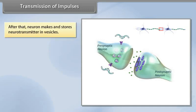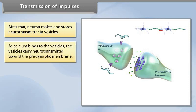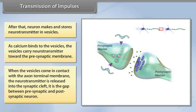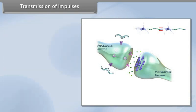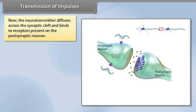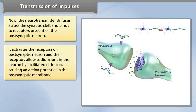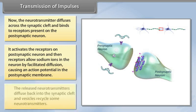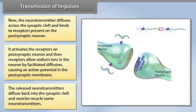The neuron makes and stores neurotransmitters in vesicles. As calcium binds to the vesicles, they carry neurotransmitter towards the pre-synaptic membrane. When the vesicles come in contact with the axon terminal membrane, the neurotransmitter is released into the synaptic cleft. The neurotransmitter diffuses across the synaptic cleft and binds to receptors on the post-synaptic neuron, activating them. The receptors allow sodium ions into the neuron by facilitated diffusion, causing an action potential in the post-synaptic membrane.